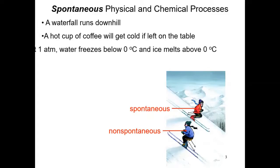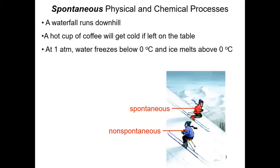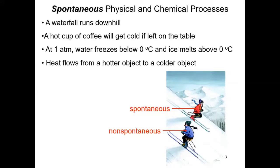At one atmosphere, water freezes below zero degrees Celsius and ice melts above zero degrees Celsius. In other words, if I have a glass with water and ice sitting at room temperature, the water is going to stay liquid but the ice is going to melt — and that is a spontaneous process. Heat flows from a hotter object to a colder object, and thanks to that process we can cook our foods on the stove.